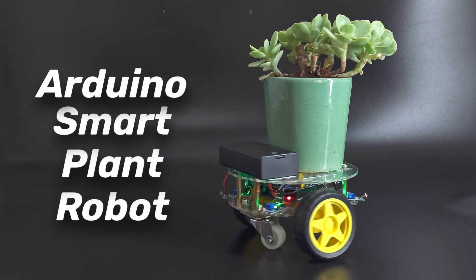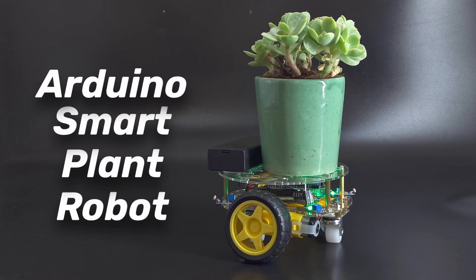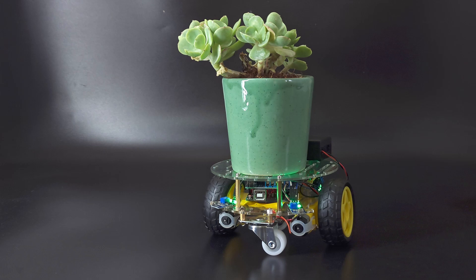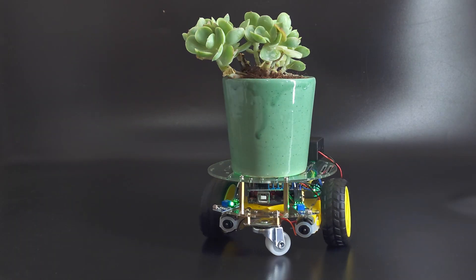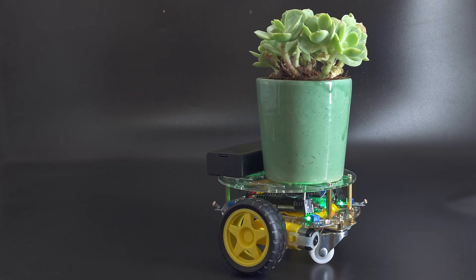Hello makers and tinkerers. Today we're going to make a smart plant robot using light-dependent resistors. We're going to make it actively seek out more light. Let's get started.